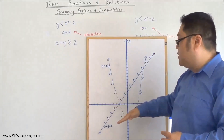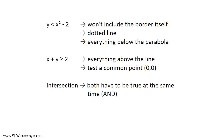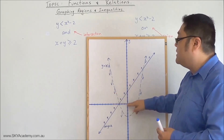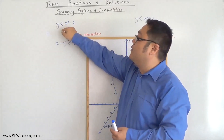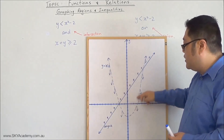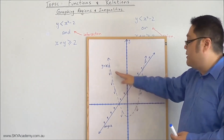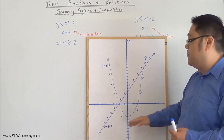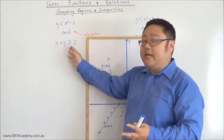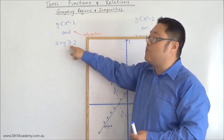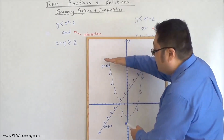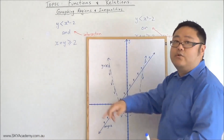x plus y is greater than or equal to 2 would be everything greater than this line. To confirm which side, I test the point (0, 0). For the parabola, zero is not less than minus 2, so the origin is not included — the region is everything below. For the line, zero is not greater than or equal to 2, so the origin is not included and the region is everything above this line.